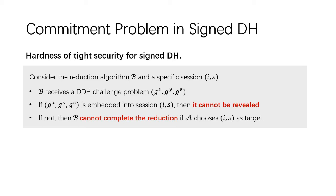Let's consider reduction algorithm B and specific session (i,s). B receives a DDH challenge problem g^x, g^y, and g^z. If the problem is embedded into session (i,s), then it cannot be revealed. And if not, then B cannot complete the reduction if A chooses (i*,s*) as its target. Therefore, B needs to guess the target session from total mu l sessions and embeds the DDH problem into it, resulting in a loose security loss at least of mu l.